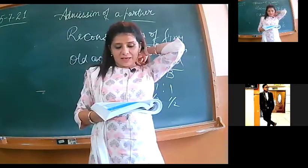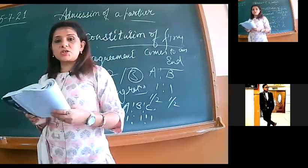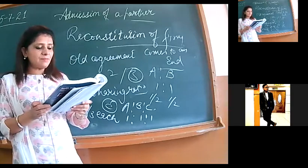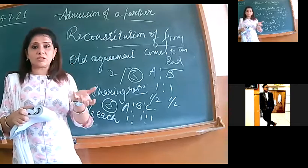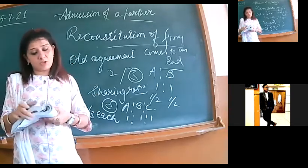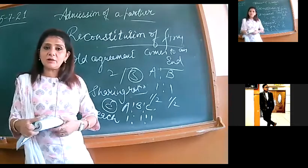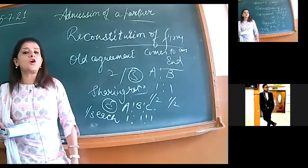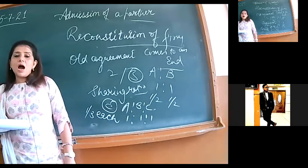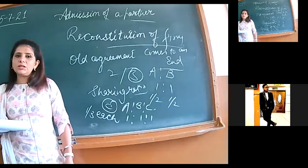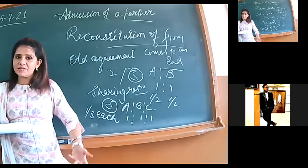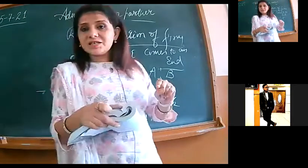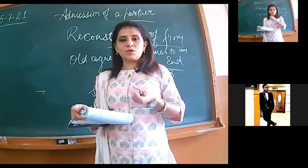Partnership act, section yaad rakhenge. According to section 31 of Indian Partnership Act, book mein underline karo, Indian Partnership Act 1932 was made even before our independence, Britishers' time. A person can be admitted as a partner. Write down the occasion when a partner can be admitted. If it is so agreed in the deed, it means that we need the consent of all the old partners to admit the new partner.